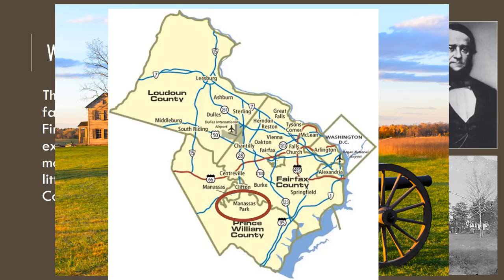What's interesting is that Wilmer McLean moves after the battle to get away from the conflict to a little town further south called Appomattox Courthouse. Ever heard of that before? If not, you'll find out the rest of his story in a future video.